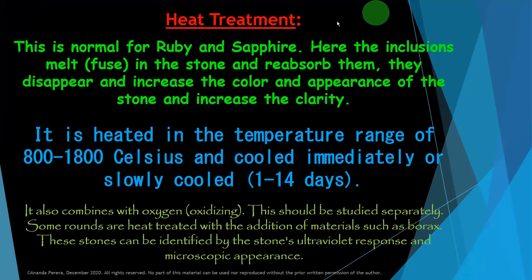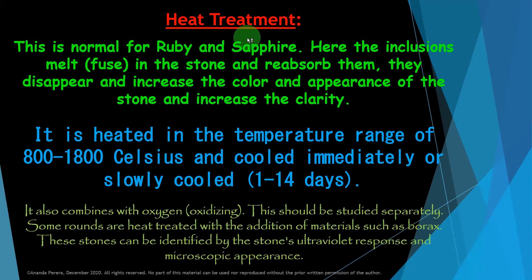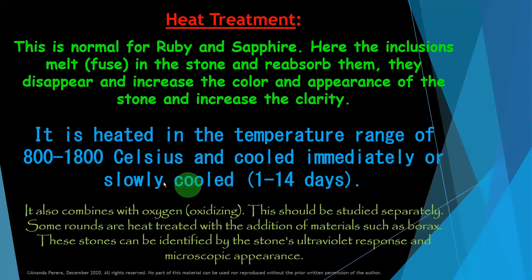Heat treatment — what is heat treatment? This is normal for ruby and sapphire. The inclusions melt in the stone, reabsorb, and disappear, increasing the color, appearance, and clarity of the stone. Heat treatment is legal. It is heated in the temperature range of 800 to 1800 degrees Celsius and cooled immediately or slowly cooled over 1 to 14 days.